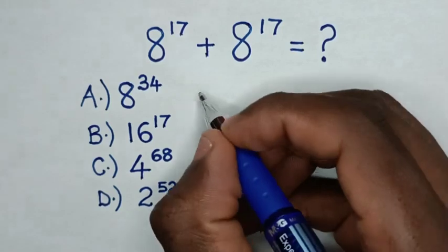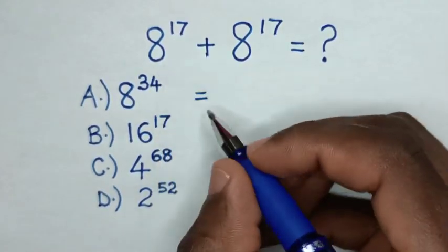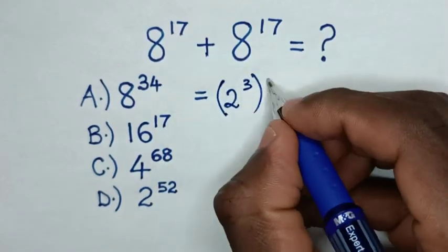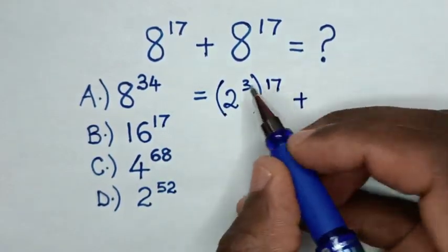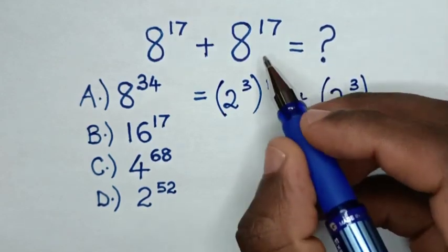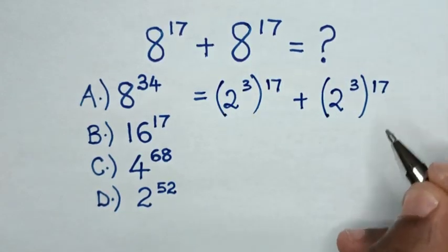From this addition of exponents, 8 is the same as 2 power of 3, then bracket power of 17, plus 8 is the same as 2 power of 3, then bracket power of 17.